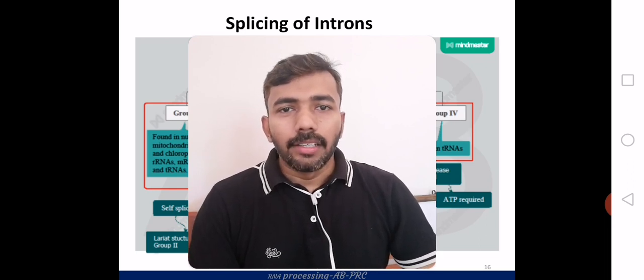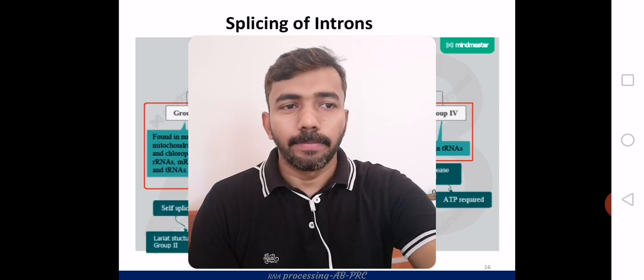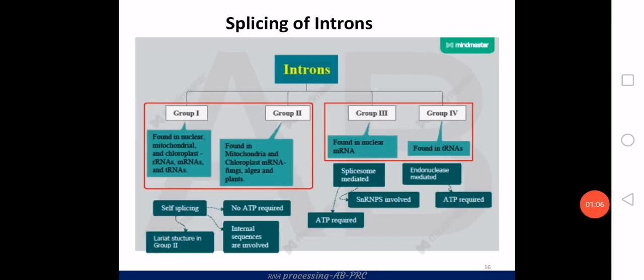Here we will see the different mechanisms to remove the introns from the mRNA molecule. There are group 1, group 2, group 3, and group 4 introns. Group 1 and group 3 introns are usually seen in mRNAs. Group 4 is commonly found in tRNAs, whereas group 2 is common in other forms like mitochondria, chloroplast mRNA, and other forms like fungi and algae.